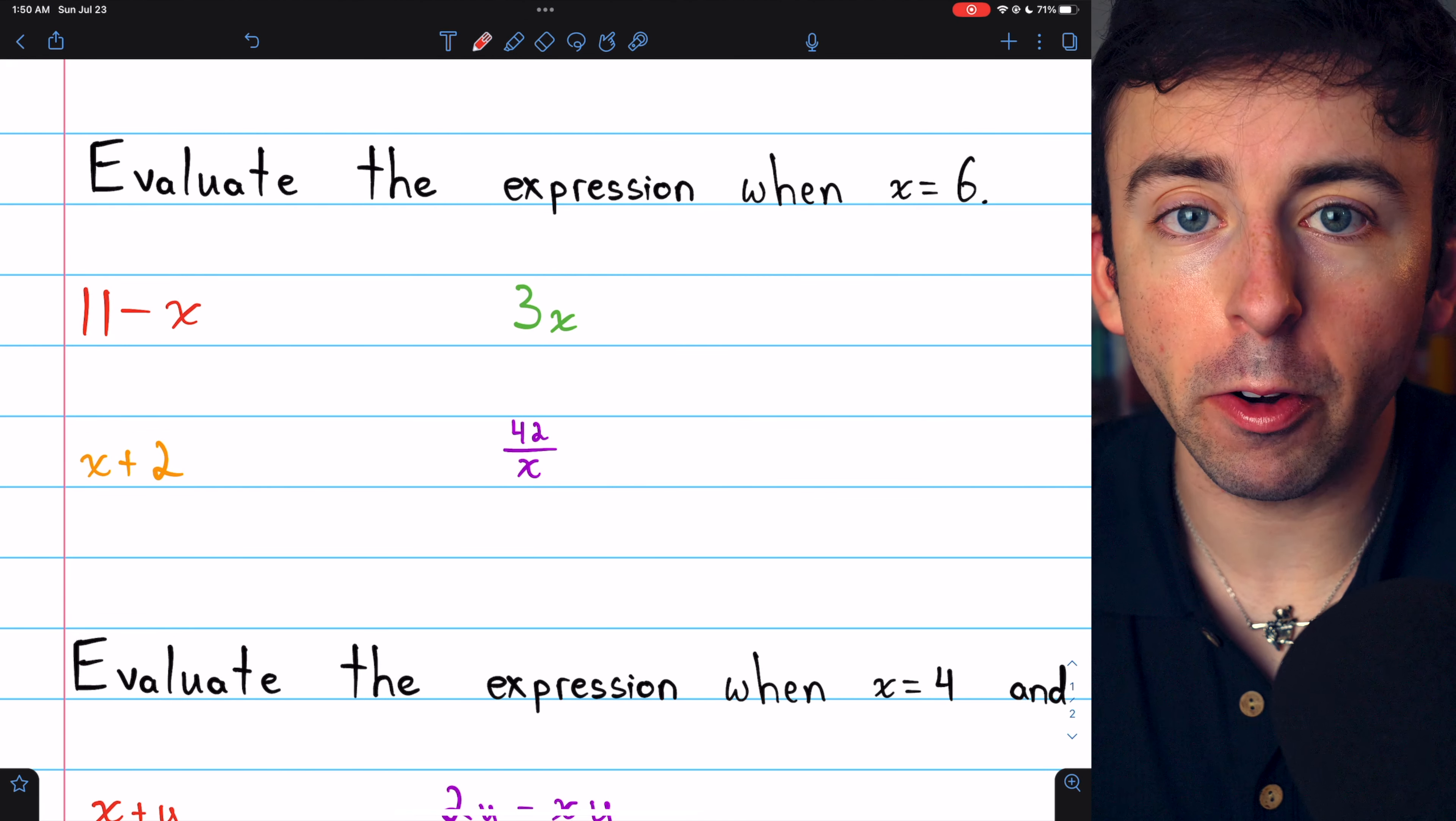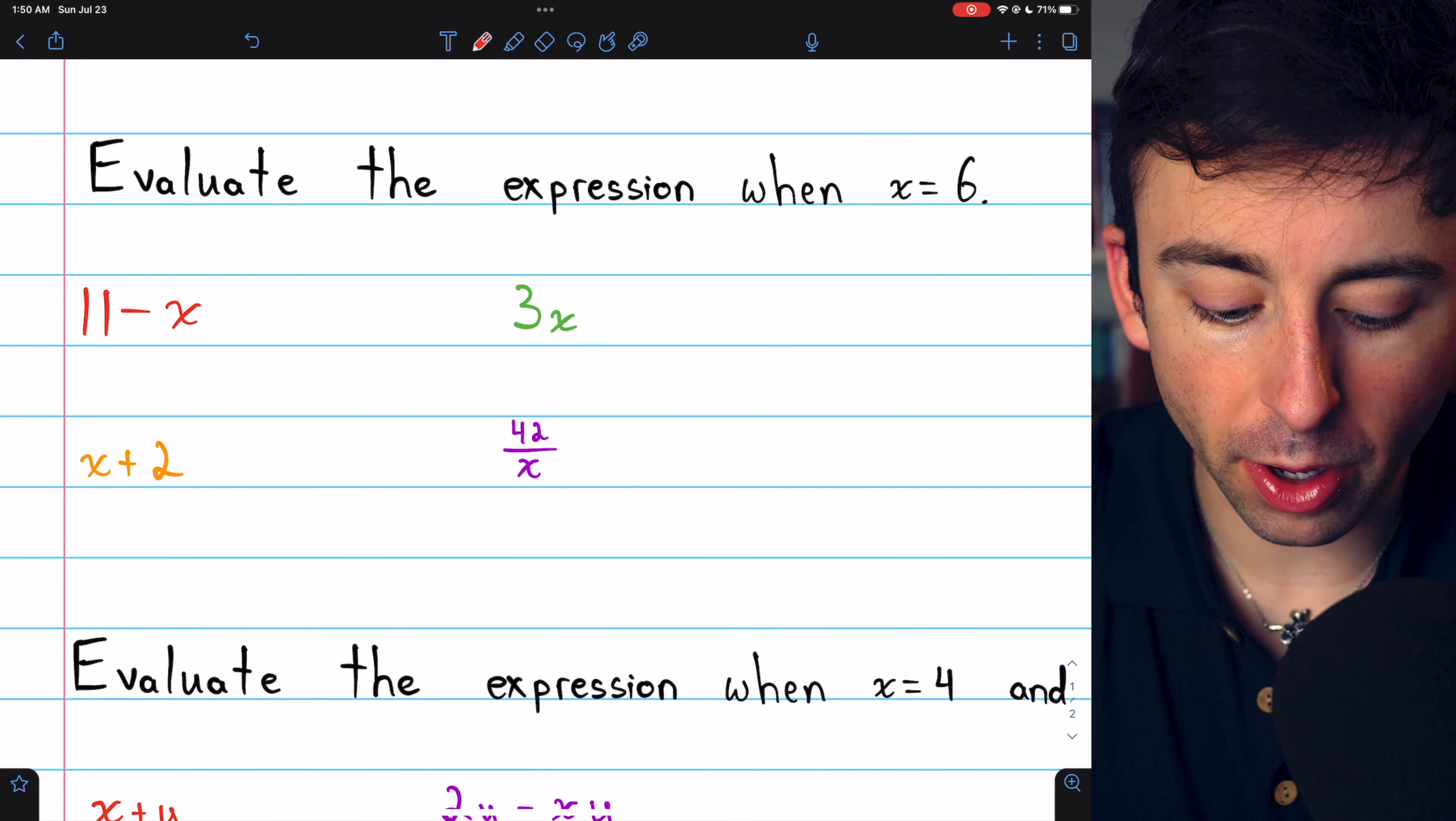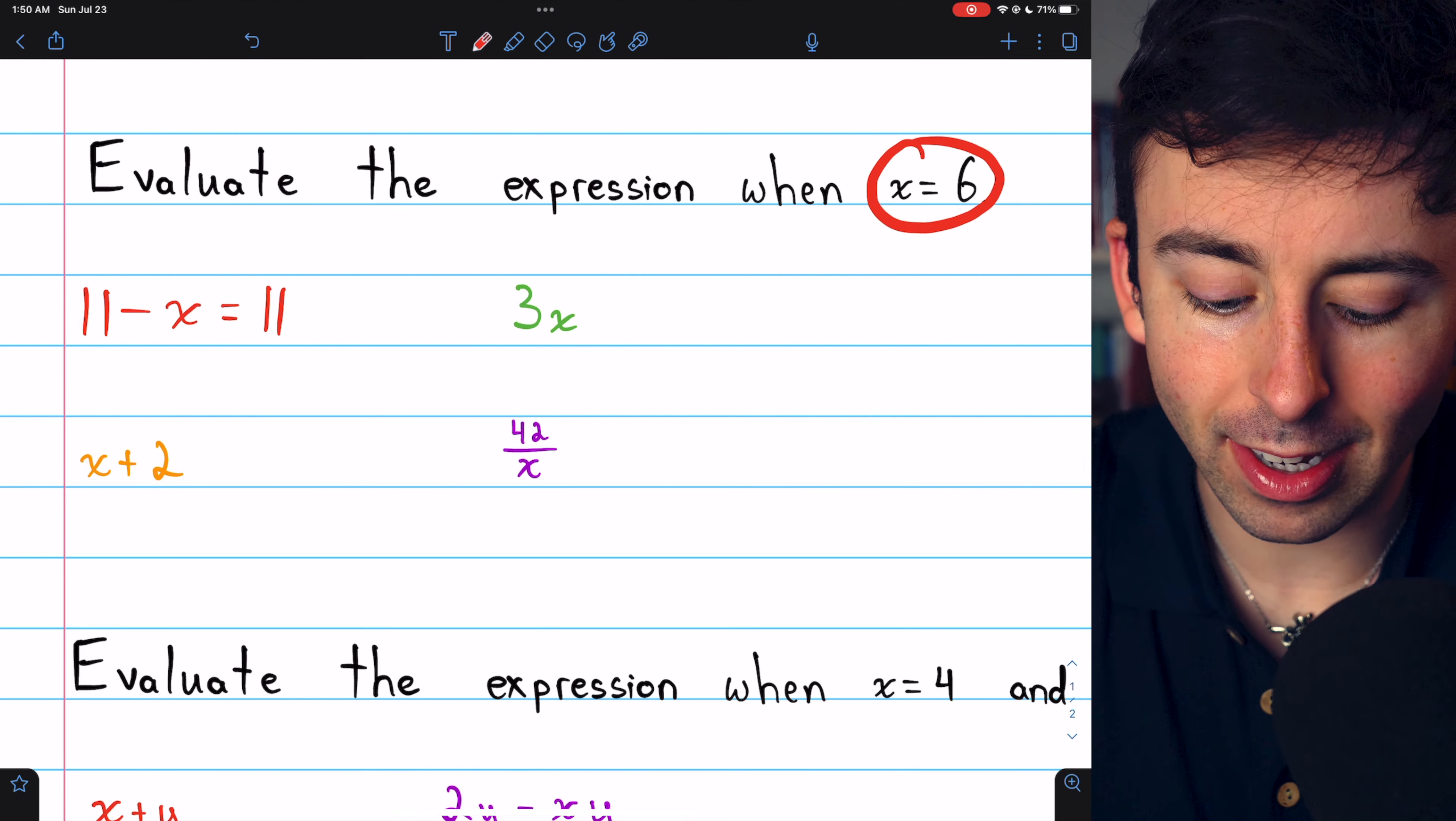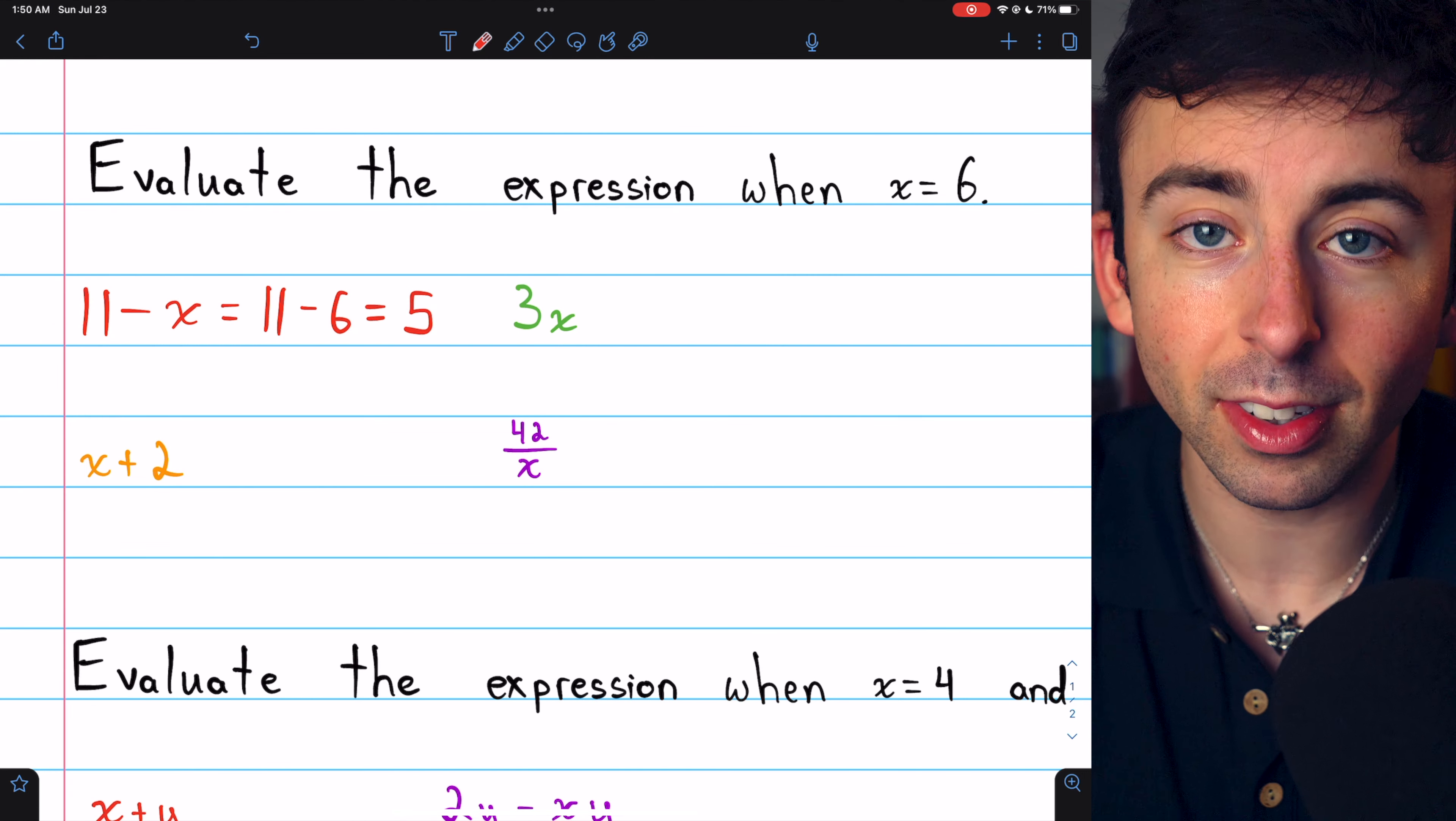To evaluate a variable expression like this, we simply replace the variable with its value. So instead of 11 minus x, well x is 6, so we have 11 minus 6, which equals 5.